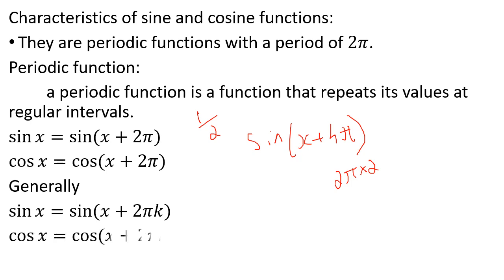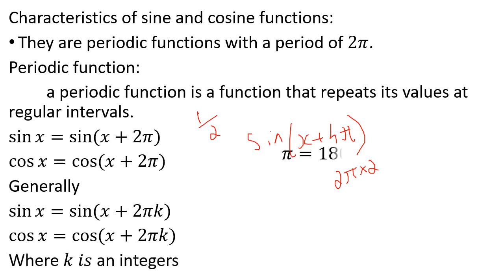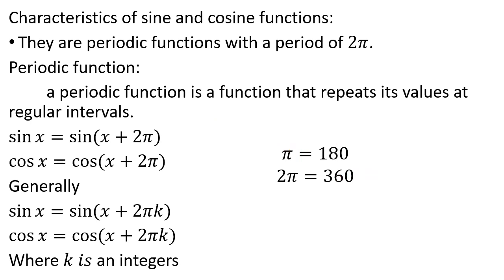So cos x equals cos of x plus 2pi k, where k is an integer. This is the idea of a periodic function. You can note that pi equals 180 degrees and 2pi equals 360 degrees.